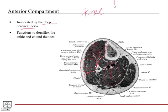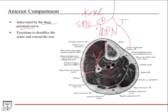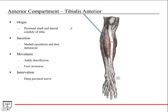The sciatic nerve comes down and splits into the common peroneal nerve and the tibial nerve. The common peroneal branches into the superficial peroneal nerve and the deep peroneal nerve. The superficial peroneal nerve goes into the lateral compartment to innervate its two muscles with a lot of sensory innervation on the lateral skin. The deep peroneal nerve travels into the anterior compartment. The anterior compartment functions to dorsiflex the ankle and extend the toes.